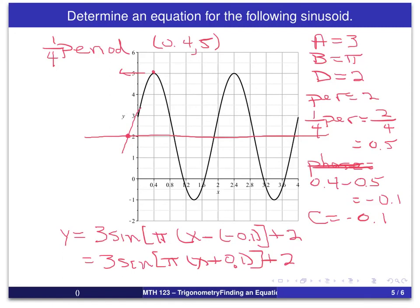One thing you might consider if you don't like the use of that negative sign is you could actually go out to this point here and see that that has an x-coordinate of 1.9. That would be a whole period from the negative 0.1.